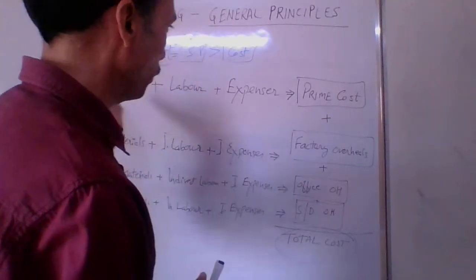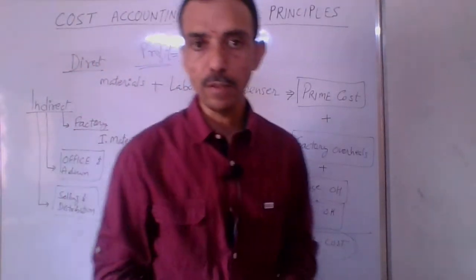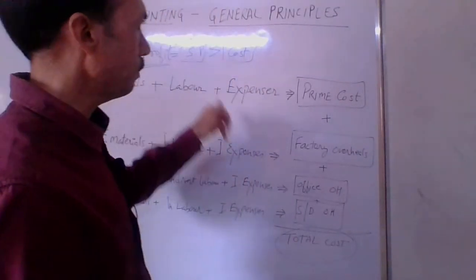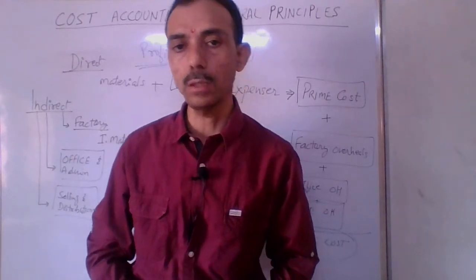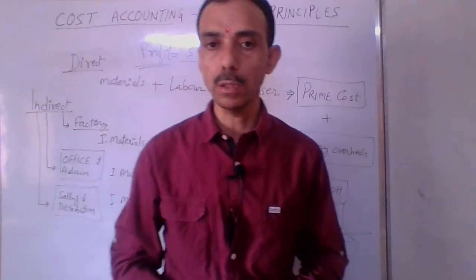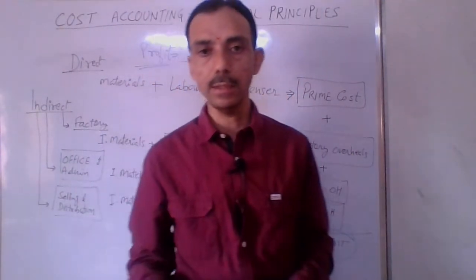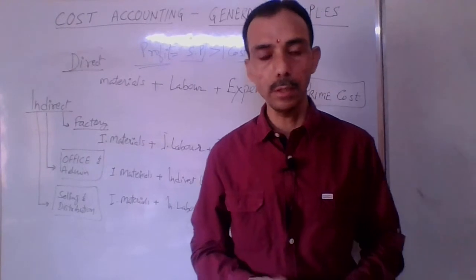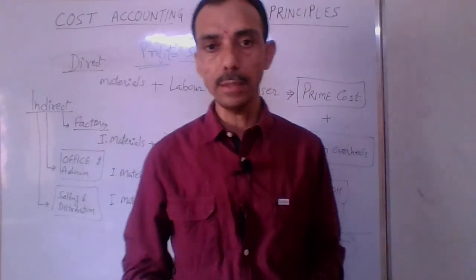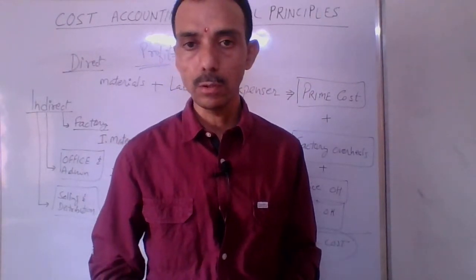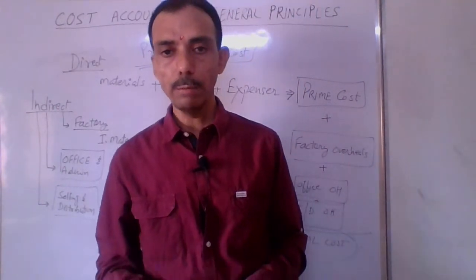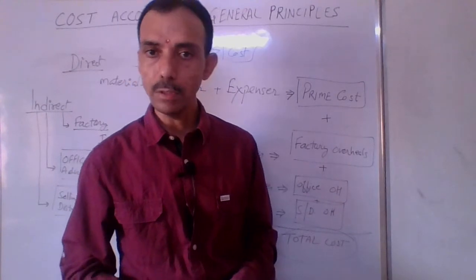This is the first class where we discuss cost accounting general principles. In later classes, we will discuss the cost sheet and what the costs are. Basically, costs are divided into four categories: direct cost, indirect cost, step cost, and semi-variable cost.